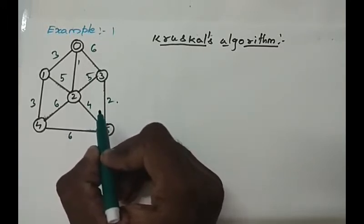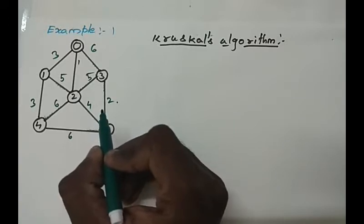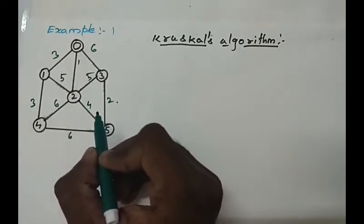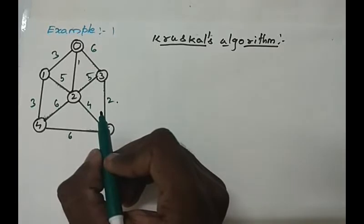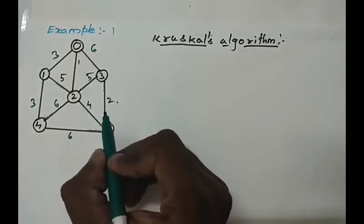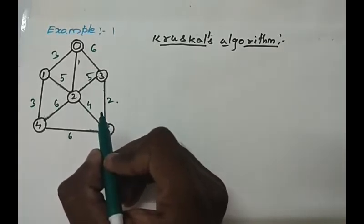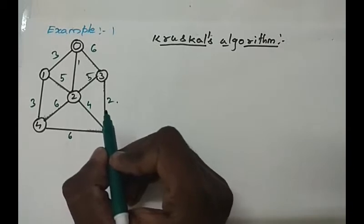The Kruskal's algorithm is like Prim's algorithm, but edges are sorted in the ascending order of the weightage. That's the only difference between Prim's and Kruskal's.